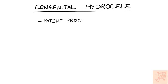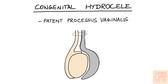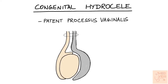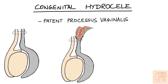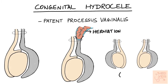Congenital hydrocele is due to persistence of processus vaginalis. So there is a connection between the abdominal cavity and the scrotum because the processus vaginalis remains patent. Remember that congenital hydrocele is due to patent processus vaginalis. Congenital hernia can happen through this patent processus vaginalis in infants, but it is very uncommon. If there is bilateral congenital hydrocele, always make sure to rule out ascites, which is the presence of excess free fluid in the abdominal cavity.